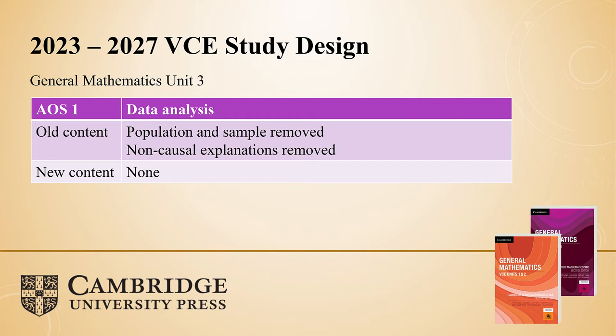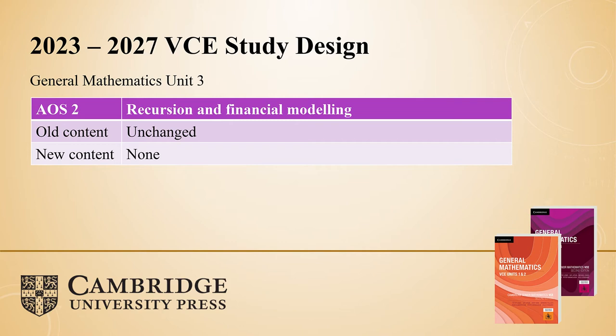Moving into unit three with the year 12 books — for data analysis there are only two changes, and they're both topics that have been removed. That brief mention of populations and samples and non-causal explanations that we never actually saw in the exams has just been removed altogether. No new content has been added to data analysis. The recursion and financial modelling topics are going unchanged moving into next year — everything we normally cover, all the recursion relations, how we use our finance solver, amortisation tables, that's all the same. We can expect similar type of questions to come up in next year's 3-4 exam.